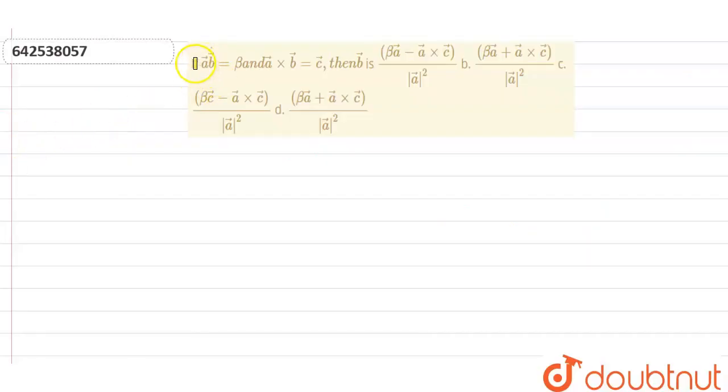Hello students, today's question is: if A⃗·B⃗ = β and A⃗×B⃗ = C⃗, then we need to find what is B⃗.